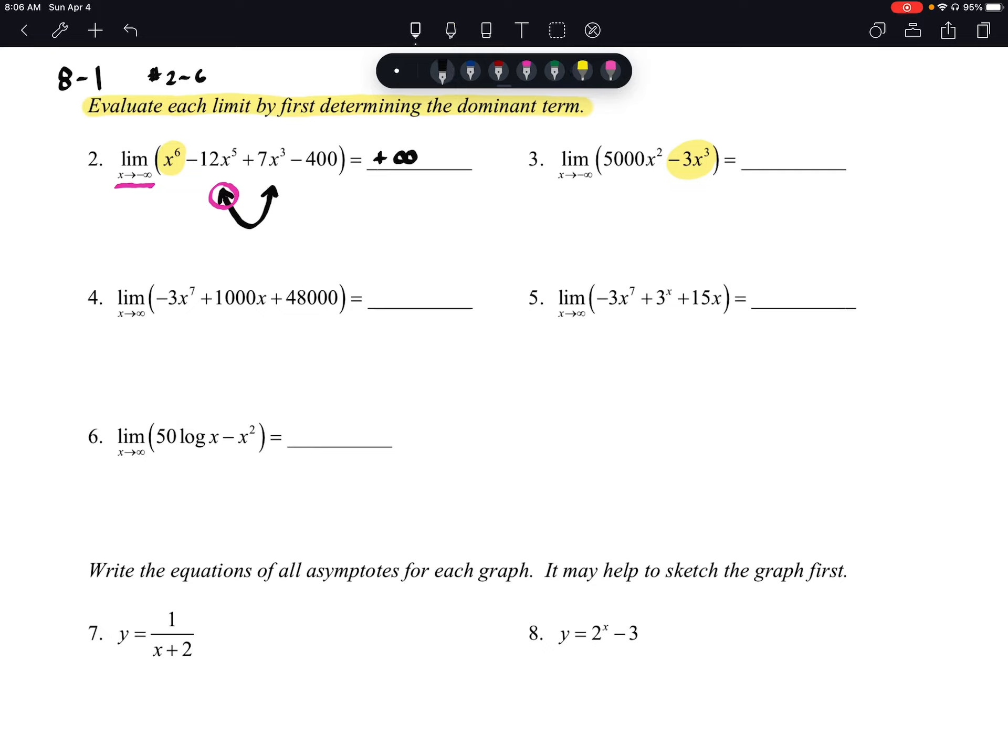And since our function is now an odd function, remember its end behaviors are opposites, and our orientation is going to be negative because we have that negative coefficient. So this one is going to look something like this—it's going down to the right.